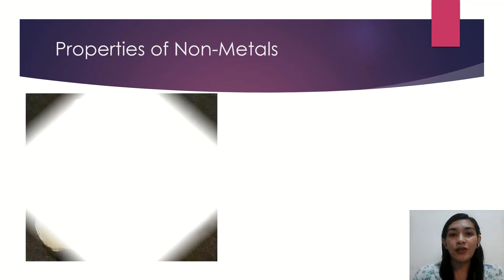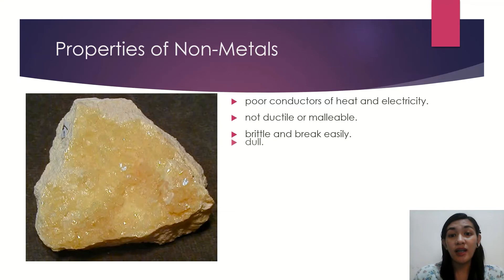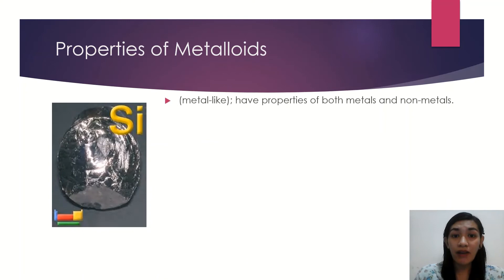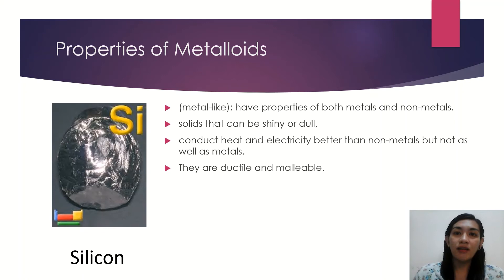Non-metals are poor conductors of heat and electricity. They are not ductile or malleable — they are brittle and break easily, and they are dull. Most non-metals are gases. Then we have the metalloids, or metal-like elements. They have properties of both metals and non-metals, and the solids can be shiny or dull. They also conduct heat and electricity better than non-metals, but not as well as metals.